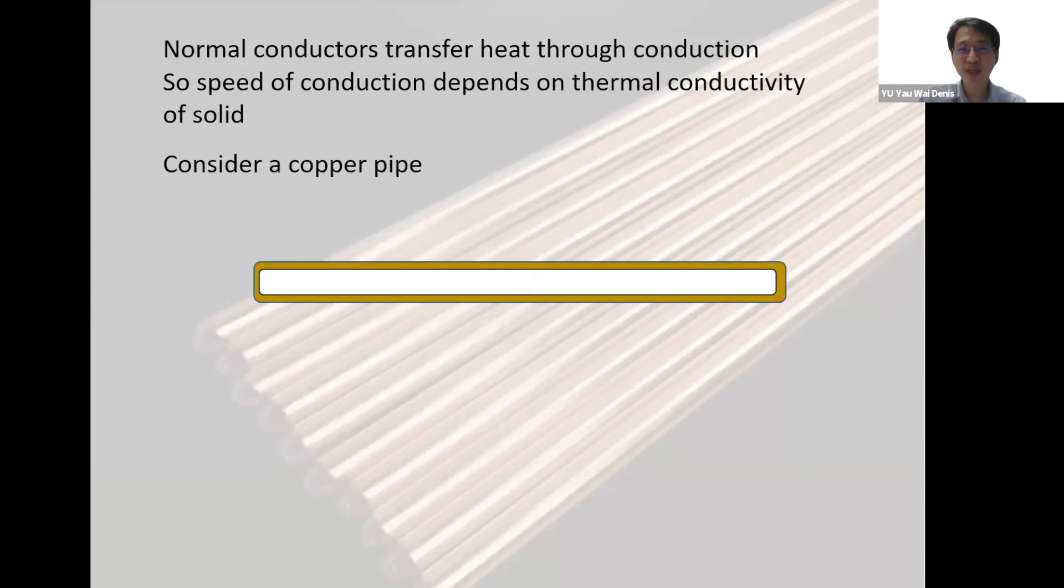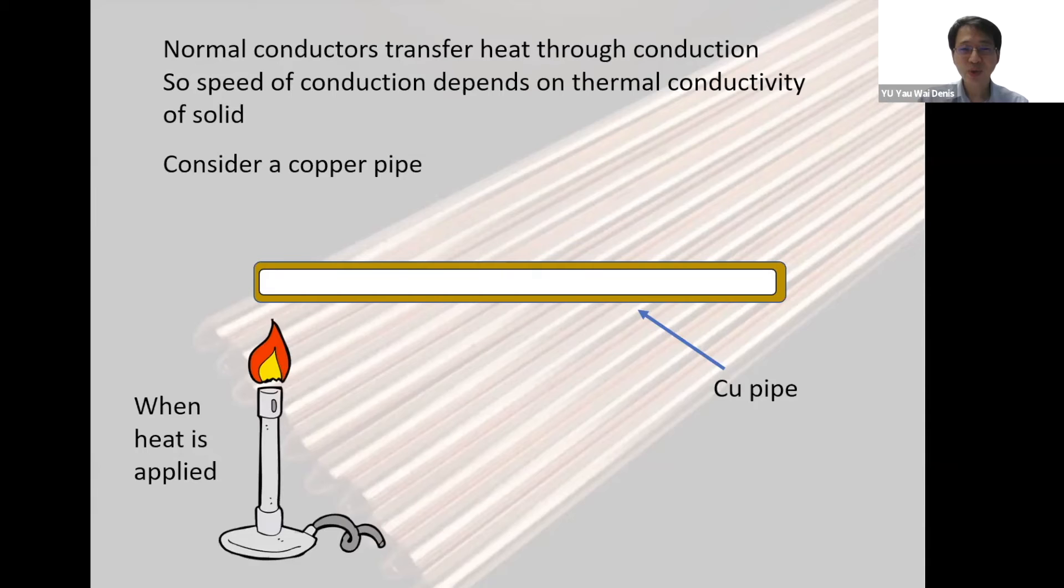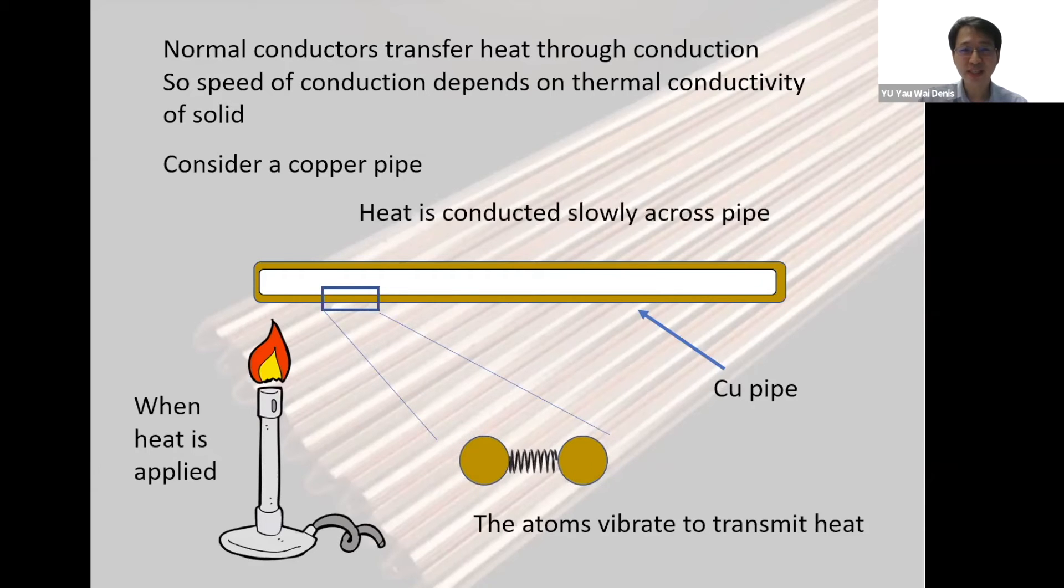So let's take a copper pipe in this case and see what happens when we apply heat to it. When the heat is applied the atoms inside the copper pipe will start to vibrate like this. So the vibration is going to conduct the heat. This conduction is relatively slow and the heat will go one by one through the atoms and then get to the end of the pipe. So that's how a regular conductor works.